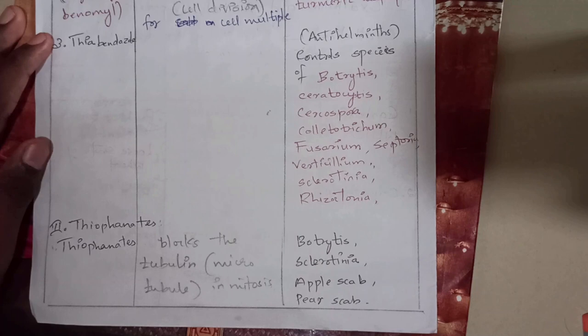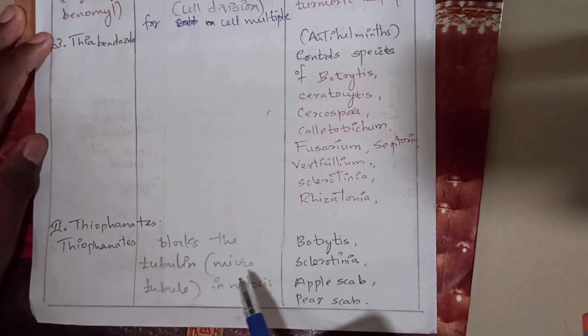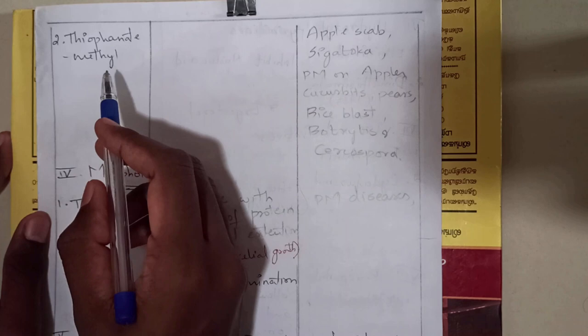The mode of action of thiophanates is that it blocks tubulin in mitosis. Tubulin is responsible for the formation of microtubules. The second compound in this group is thiophanate methyl.